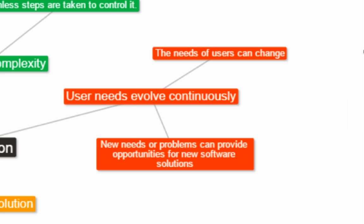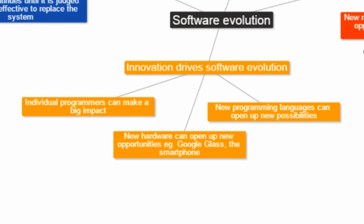This brings us to the next factor that influences software evolution: innovation. New hardware can open up new opportunities for developers. For example, smartwatches and wearable technology have opened up the opportunity for new types of apps. The Oculus Rift and other virtual reality headsets have also opened up new opportunities in software development, such as virtual reality games and simulation-based training. Games are also an example, and consoles are constantly being updated with new processors and new hardware. The iPhone and the App Store is one of the biggest examples of innovation opening up new opportunities for developers. Imagine how much software would not exist without smartphones and app stores or marketplaces.